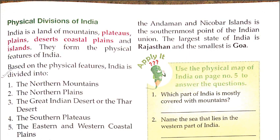India is the land of mountains, plateaus, plains, desert, coastal plains and islands. That means India has been divided into mountains, deserts, islands, plains, coastal plains, and peninsulas. These are the physical features of India — based on these 6 things, India has been divided into different parts.